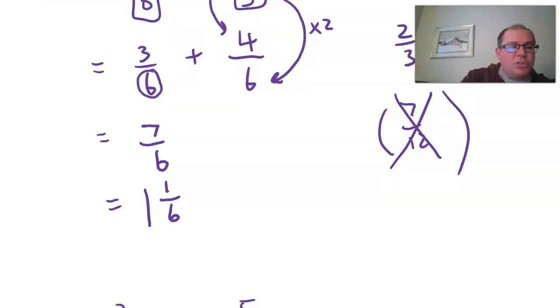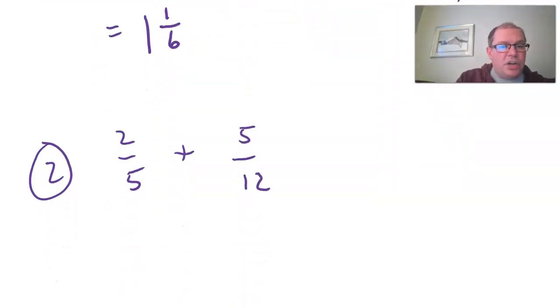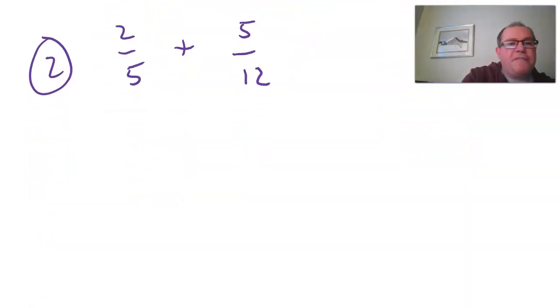You're going to try example two now on your own. So pause the video, think of a number that five and 12 both go into and write them as equivalent fractions and see if you can add two fifths add five twelfths and then I'll go through it.